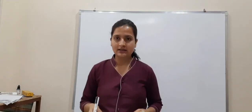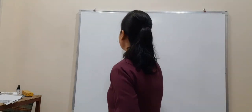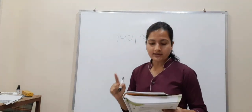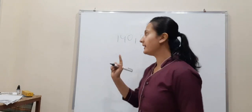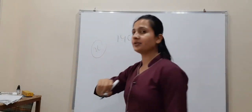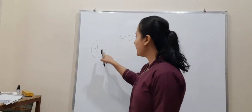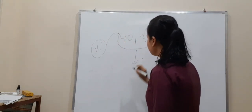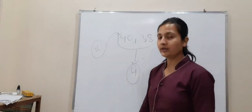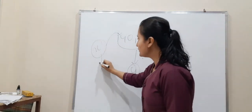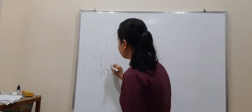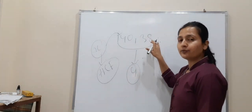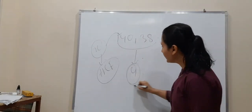First let's try to understand the question. Two numbers are given, that is 140 and 38. We have to find the greatest number — suppose x — so that when x divides these two numbers, it will leave remainder 4. So this x is your HCF. It means we have to find HCF of 140 and 38 which after dividing will leave the remainder 4.